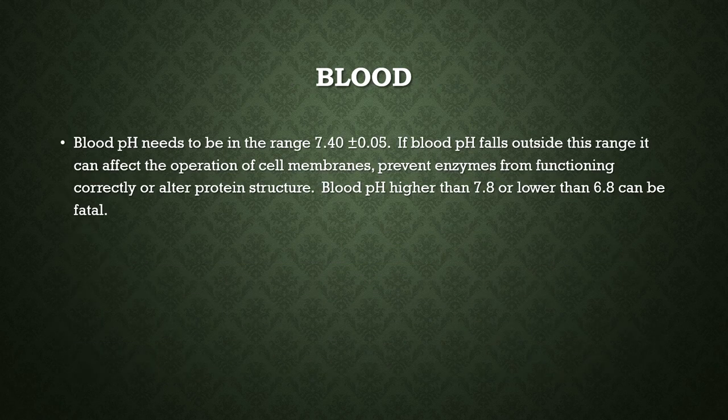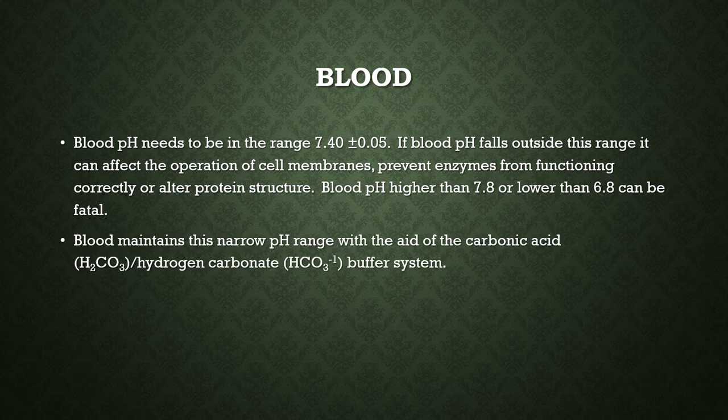In our blood, the pH needs to be about 7.40 ± 0.05. If it falls outside this range, cell membranes and enzymes can't function, protein structures can change, and this can essentially be fatal — blood pH needs to stay between 6.8 and 7.8. So if you took a sip of lemon juice, your blood pH doesn't completely go acidic. Conditions where it goes wrong include acidosis or alkalosis. So the buffer's function in blood is really, really important. In our blood, we have a carbonic acid / hydrogen carbonate buffer system, and the carbonic acid is formed from the CO₂ produced as part of our respiration — CO₂ reacts with water to form carbonic acid.